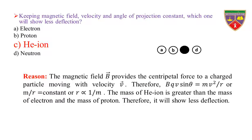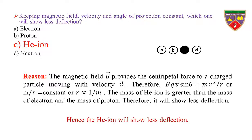Reason: The magnetic field B provides the centripetal force to a charged particle moving with velocity V. Therefore, BQV sinθ = MV²/R. Since V, θ, Q, and B are constant, M/R = constant, so R is inversely proportional to the mass of the particle. The mass of the helium ion is greater than the mass of the electron and proton. Therefore, it will show less deflection. Neutron is not deflected as it is the neutral particle. Hence, helium ion will show less deflection.